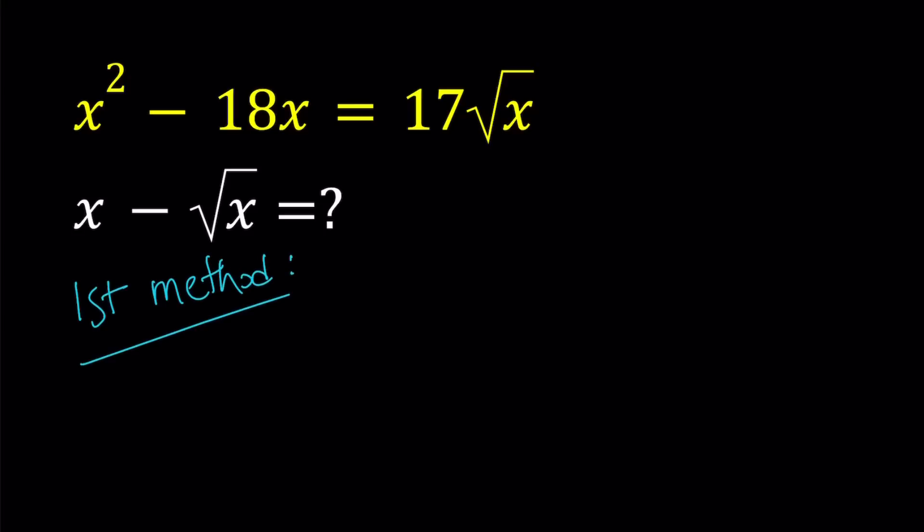First of all, notice that if x is equal to 0, then this equation is going to be satisfied because 0 equals 0. And if you plug in 0 for x, then you get 0 as well. So our expression is going to equal 0 if x is equal to 0.